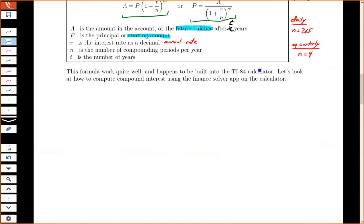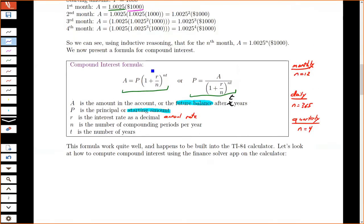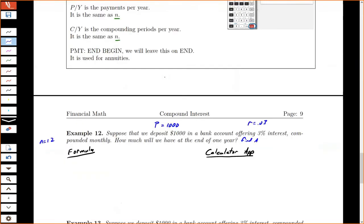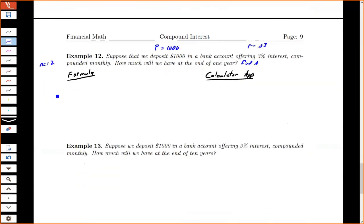So if I go back to my formulas, I want to use the A equals formula. A equals P times parenthesis 1 plus R over N to the N T. And then I fill in my values. I have 1,000, 1 plus 0.03 divided by 12, the 12 times, and it's at the end of one year. So my time is 1.